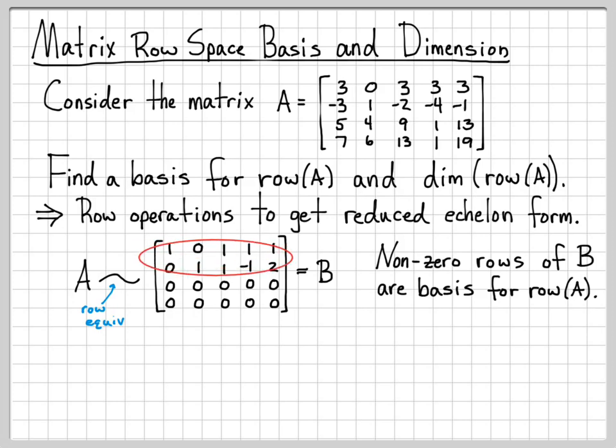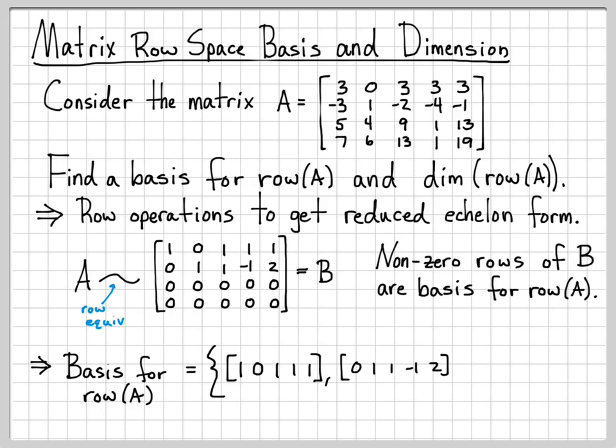There are two nonzero rows, so we're going to have two vectors in our basis for the row space. The basis for the row space of A consists of vectors [1, 0, 1, 1, 1] and [0, 1, 1, -1, 2]. So these two vectors are what I need to form a basis for the row space.